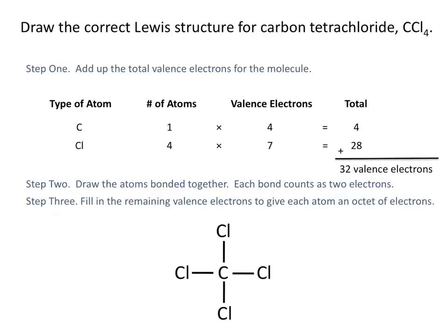The third step is to fill in the remaining valence electrons to give each atom an octet. We'll start by filling in the octets for each of the chlorine atoms, using up the remaining 24 valence electrons, giving each chlorine atom an octet of electrons.